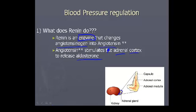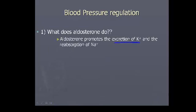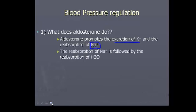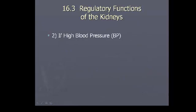What does aldosterone do? Aldosterone promotes the excretion of K+ and the reabsorption of Na+. If there's more Na+ in the blood vessels, H₂O is going to follow. With more volume, this leads to an increase in blood pressure.